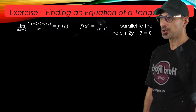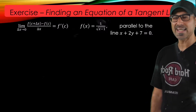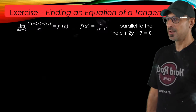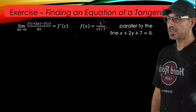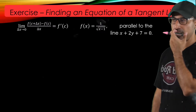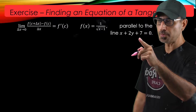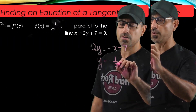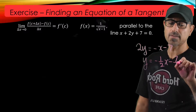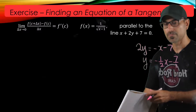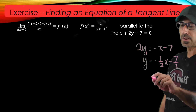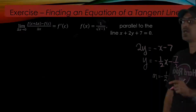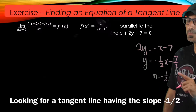In this exercise we're looking for the tangent line to the curve parallel to the line x plus 2y plus 7. The point is not provided to us — we'll find that along the way. Let's first find the slope of this line. Putting it in slope-intercept form gives negative one-half x minus seven-halves, which implies the slope is negative one-half. So we want the slope to be negative one-half.